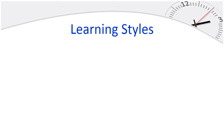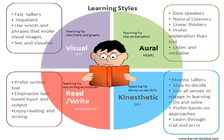People generally fit into more than one VARK category. The majority of people fit at least two categories; some fit three. A smaller number will score equally in all four categories. Most adults adapt into multimodal learners and are able to learn using multiple styles.